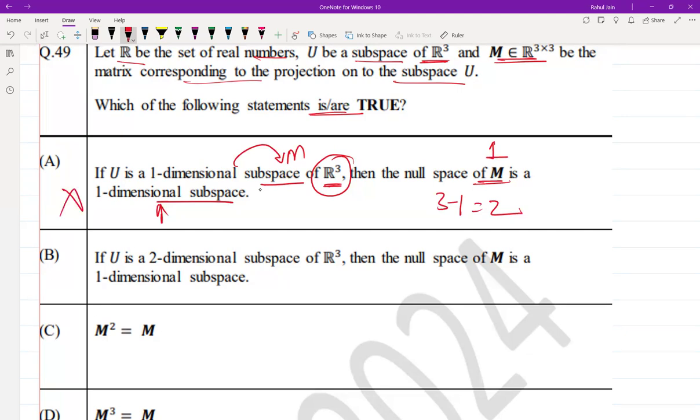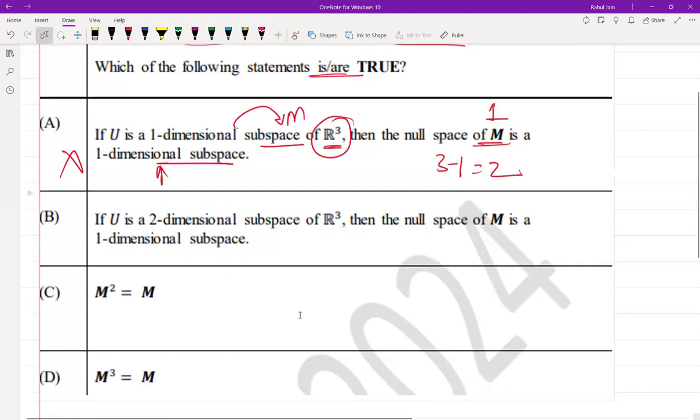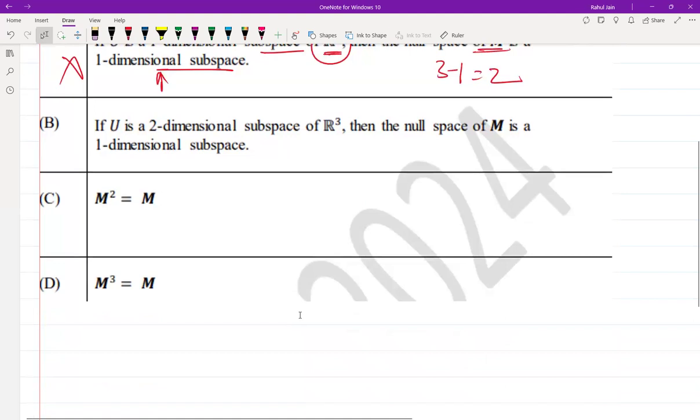And option B: if U is a two-dimensional subspace of R³, then the null space of M is a one-dimensional space. So if U is two-dimensional, then M projects onto a plane on R³, and the rank of M will be 2 because it is projecting on a two-dimensional space.